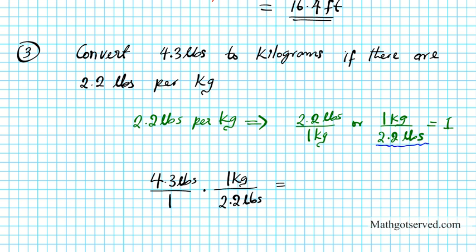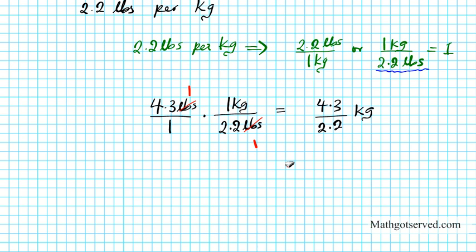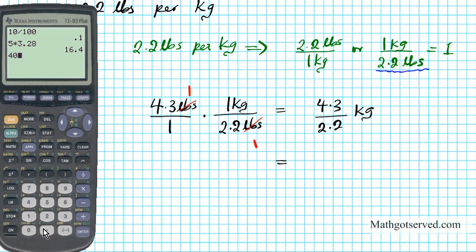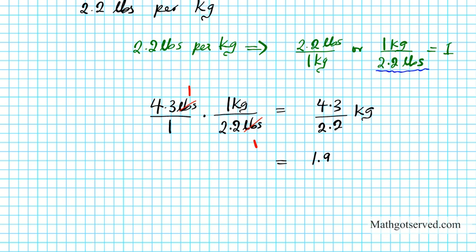See what happens: the pounds divide out, leaving us with kilograms, which is what we want. Multiplying across, we have 4.3 over 2.2 kilograms. So we just divide this out to get our final answer. Using a calculator: 4.3 divided by 2.2, the answer is 1.95. So rounding to two decimal places, the answer is 1.95 kilograms. So 4.3 pounds is 1.95 kilograms.